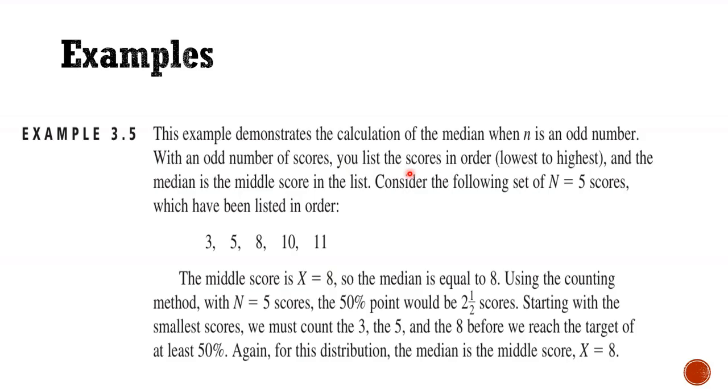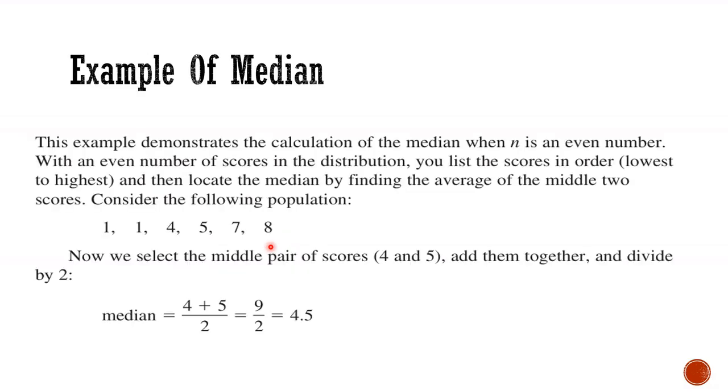Now examples: there are two examples to calculate the median. First is odd frequency. So 3, 5, 8, 10, 11. So 8 is the median here. Now if an even number is given, when n is an even number: 1, 1, 4, 5, 7. We will take the middle two, 4 plus 5 then divide by 2. That is 4.5 is the median in this case.